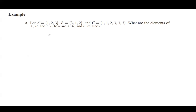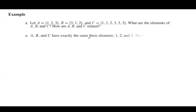The question says: what are the elements of these three sets, and how are these sets related? First of all, sets A, B, and C have exactly the same three elements, which are one, two, and three. So sets A, B, and C are basically the same set.